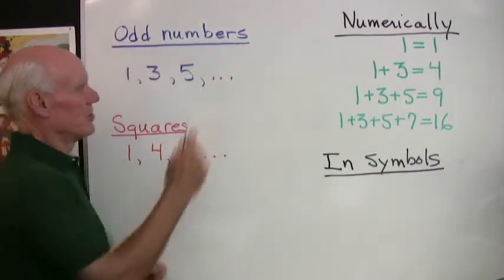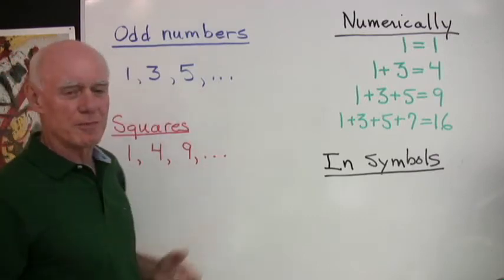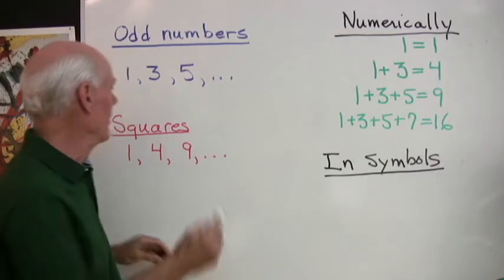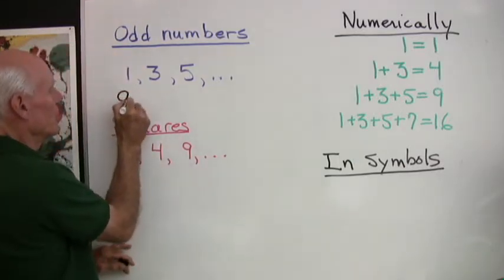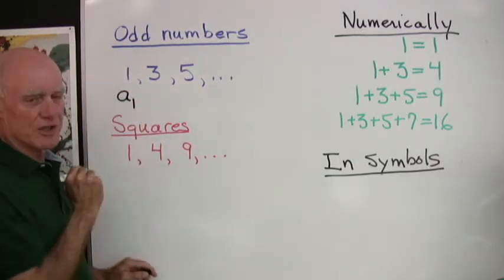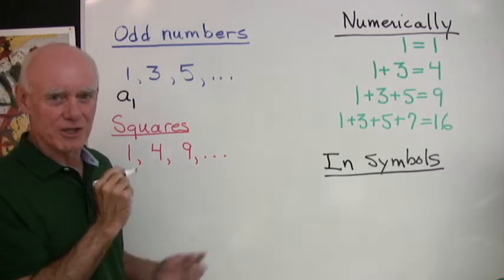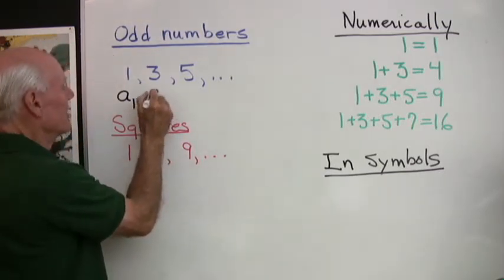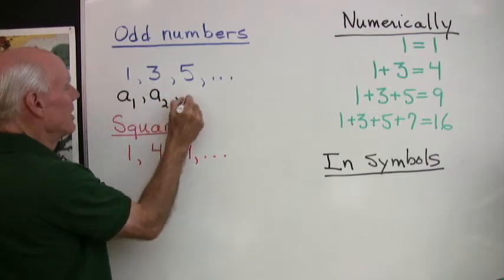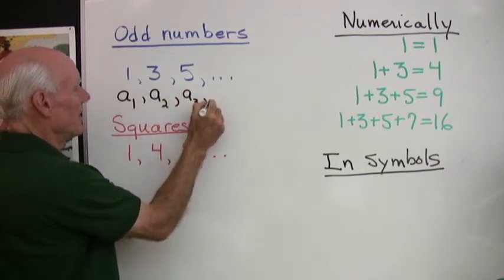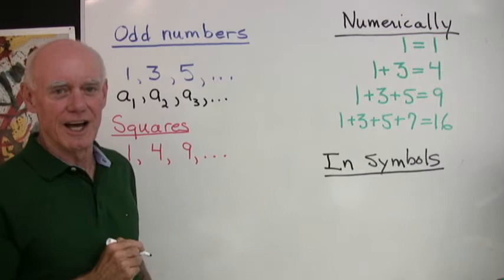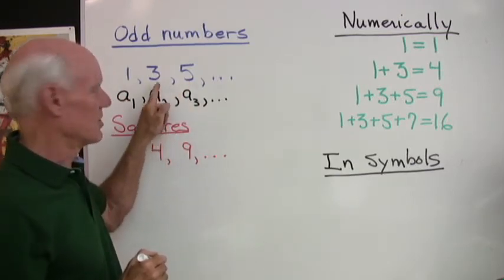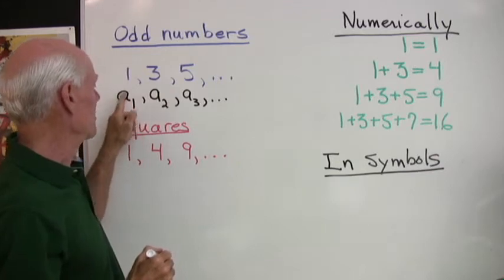Let's look at the odd numbers. These are all just numbers, but this is a sequence, so I can generalize it by calling it sequence A. I'll use a subscript for the first term. So this is A sub 1, the first term in that sequence. This is A sub 2, this is A sub 3, and so on. The third term in sequence A is 5, the second term is 3, the first term is 1.